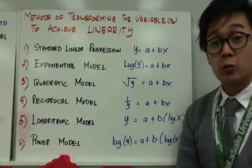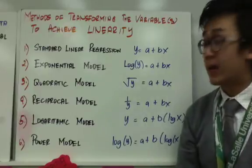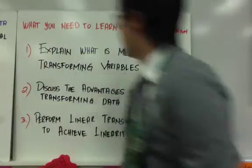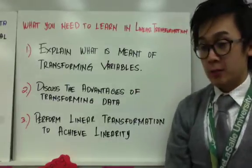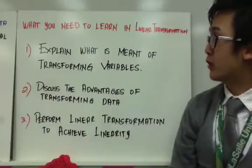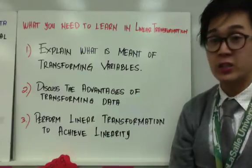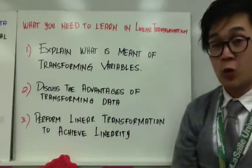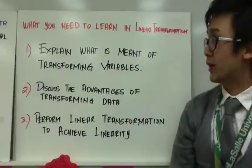This is how the equation or model will look if we transform it to create a linear relationship between the EV and the RV. In this chapter, we are supposed to learn how to explain what is meant by transforming variables, discuss the advantages of performing linear transformation in a bivariate relationship, and perform linear transformation in our model to achieve linearity in a bivariate data relationship.